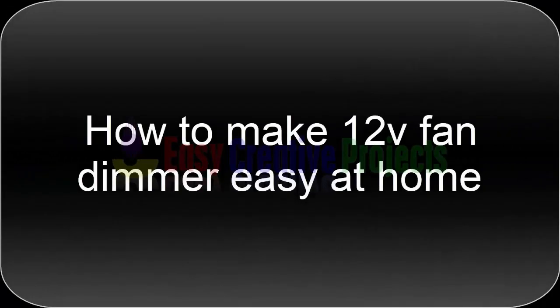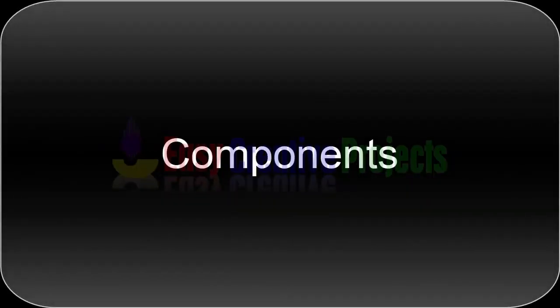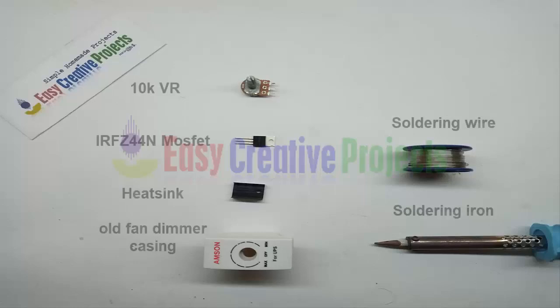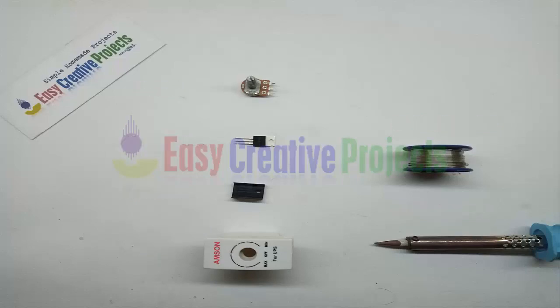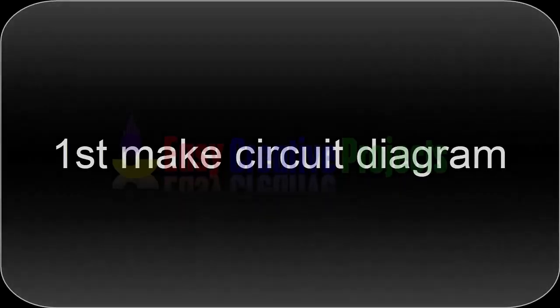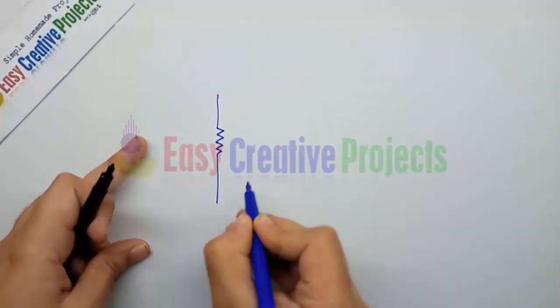Hello friends, today we learn how to make a 12 volt fan dimmer easy at home. For making this project we need some components: 10k variable resistor, IRFZ44N MOSFET, heat sink, old fan dimmer casing, soldering wire, and soldering iron. First make a circuit diagram. The 10k variable resistor has 3 pins.